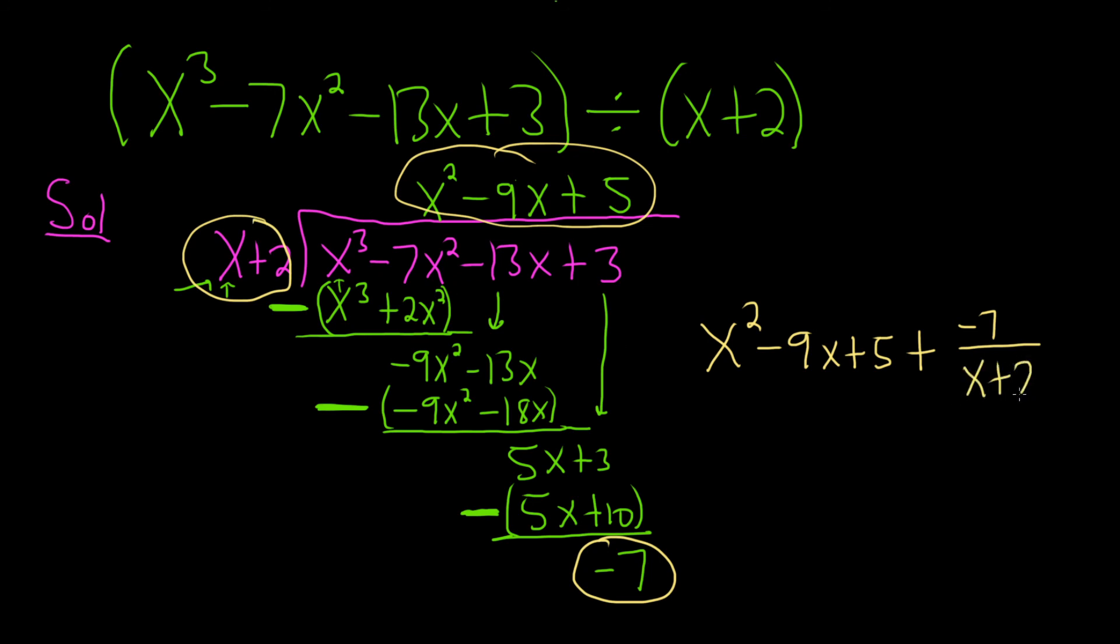So it's always quotient plus remainder over divisor. You can rewrite this in a prettier way. I'm going to as follows: x squared minus 9x plus 5 minus 7 over x plus 2. Much prettier answer than this one up here. I hope this video has been helpful. That's it.